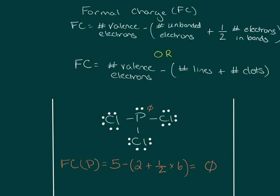The formal charge on phosphorus is zero, and we can denote that by putting a little zero next to the phosphorus. Using the other definition — number of valence electrons minus the number of lines (three lines on phosphorus) plus the number of dots (two) — that's also zero. I'll proceed using the lines-and-dots definition, but feel free to use either one.